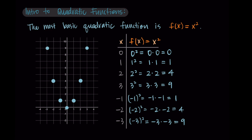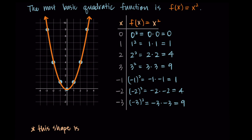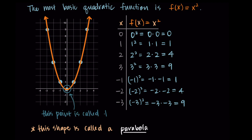This is enough to graph the general shape of the function. This particular shape is called a parabola — when a quadratic function is graphed, it looks like a parabola. We also have a special point: for this parabola it's at the bottom at (0, 0), and it's called the vertex. It's the middle point where the symmetry changes — you kind of know it when you see it.